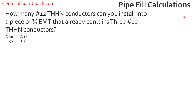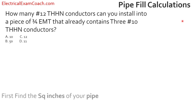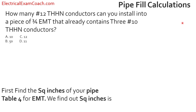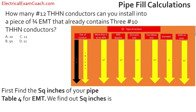Practice question: How many more number 12 THHN conductors can you install into a piece of 3/4-inch EMT that already contains three number 10 THHN conductors? First, we find the total available area. We head to Chapter 9 Table 4 for EMT, verify we're in the right conduit type, find 3/4-inch on the left, then cross over to the more-than-two-wires column — the 40% column — and find that our available area is 0.213 square inches.